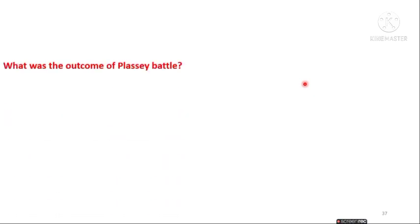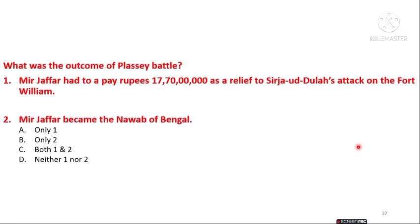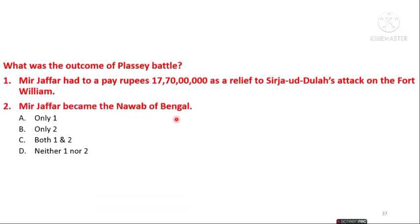The next question is: what were the outcomes of the Battle of Plassey? Statement 1: Mir Jafar had to pay rupees 17 crore 70 lakhs as relief fund for Siraj ud-Daulah's attack on Fort William. Statement 2: Mir Jafar became the Nawab of Bengal. The options are only 1, only 2, both 1 and 2, or neither. The answer is both 1 and 2 — these are the two outcomes of the Battle of Plassey.